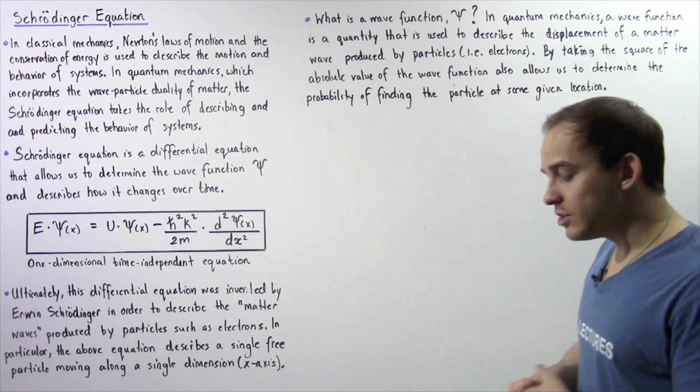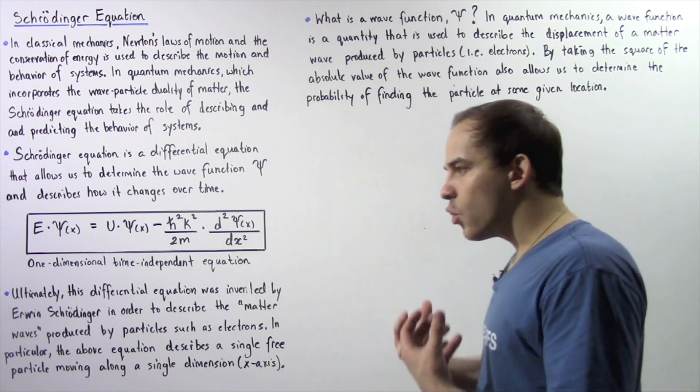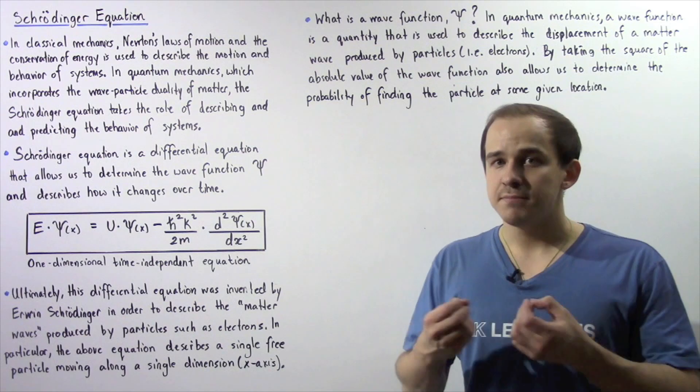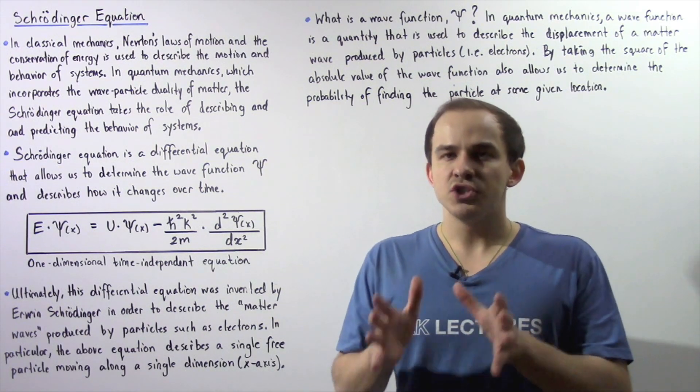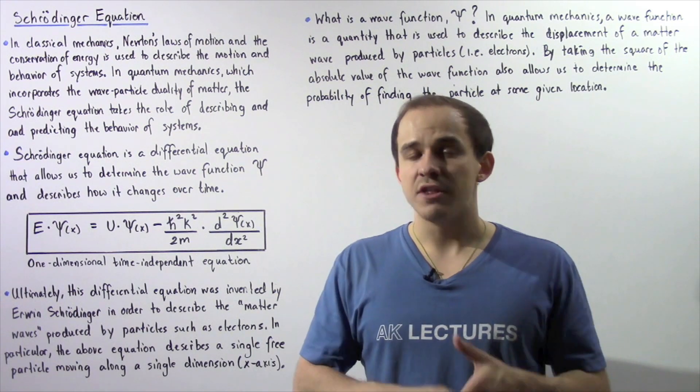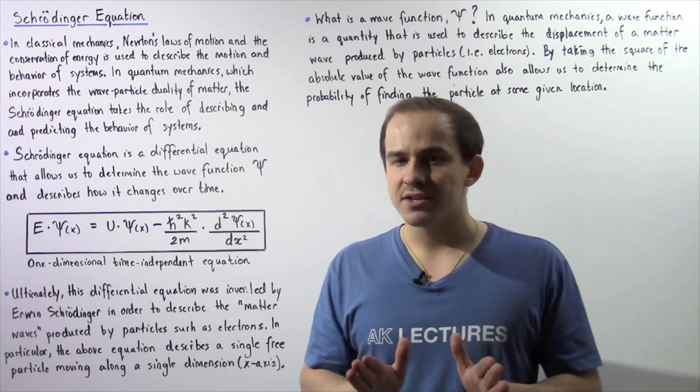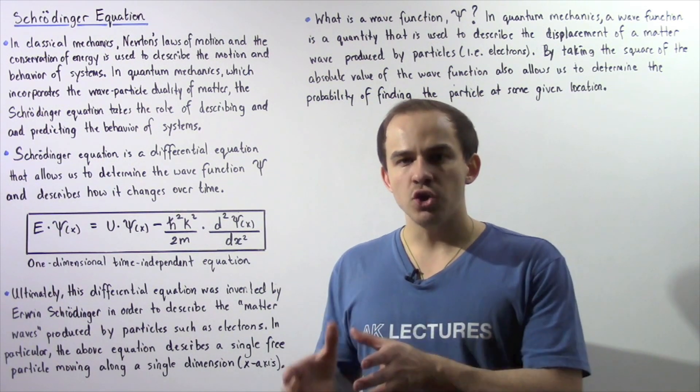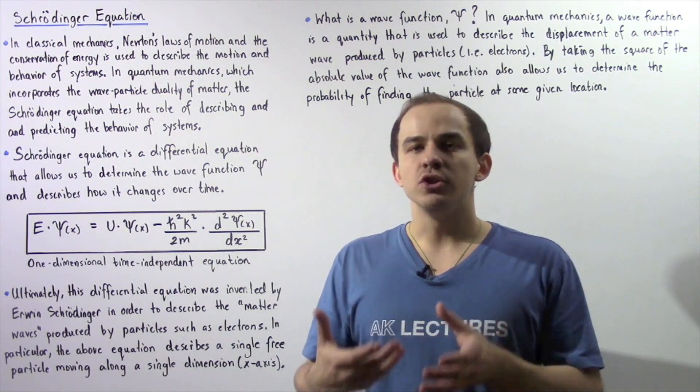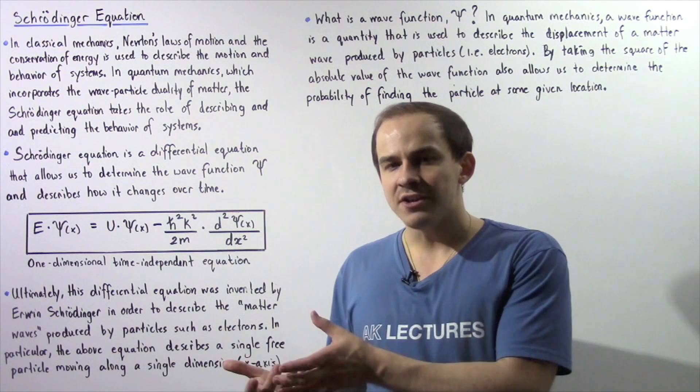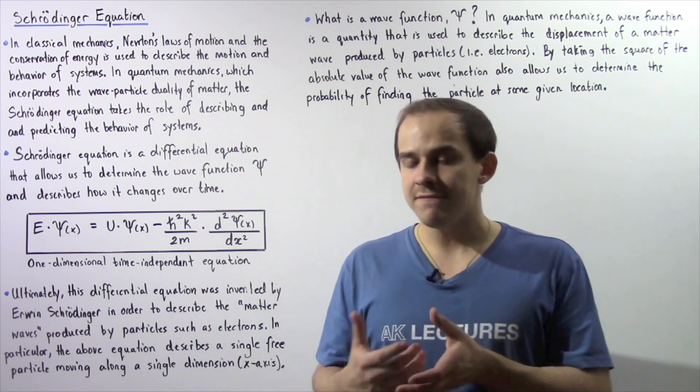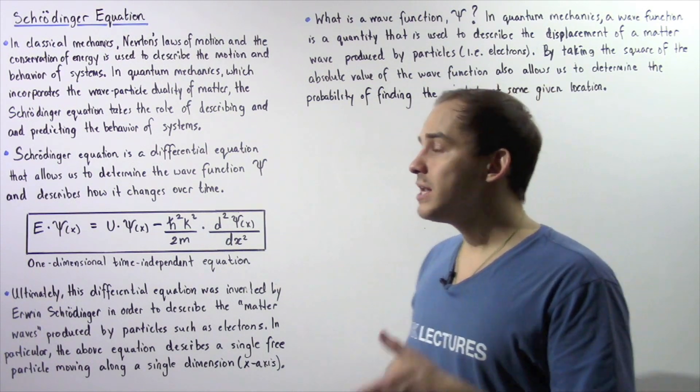Now on the other hand, in quantum mechanics, we incorporate the wave-particle duality of nature. That means our electron doesn't only act as a particle, it can also act as a wave. And that means in quantum mechanics, we cannot actually use Newton's laws of motion as well as the law of conservation of energy to study and describe the behavior of our system, the behavior of our electron.